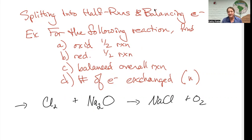You can read this, but it says for each of the following, we're going to find the oxidation half reaction, the reduction half reaction, the balanced overall reaction, and figure out how many electrons are exchanged, which for some later problems is going to be called N. N is the moles of electrons exchanged in a balanced reaction.